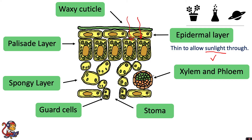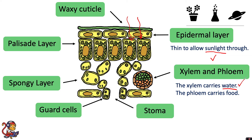These tubes are called the xylem and the phloem. The xylem carries the water — this is how the water gets from the roots to the leaf, and this is needed for photosynthesis. The phloem carries the food, and the food for the plant is the glucose that is produced in photosynthesis, so the phloem can then carry this around the plant.